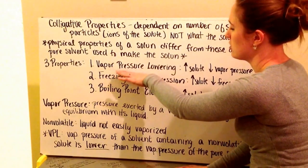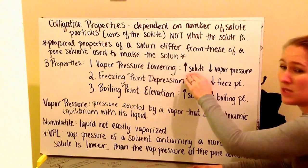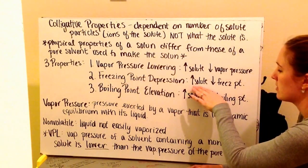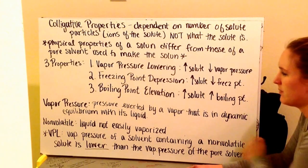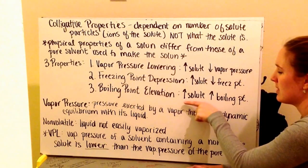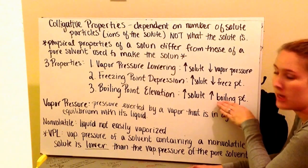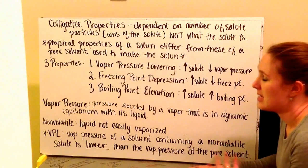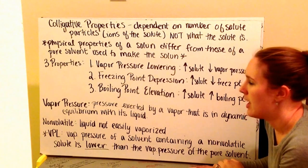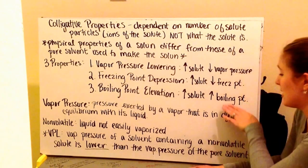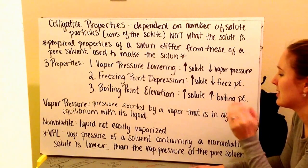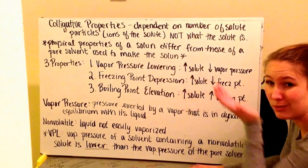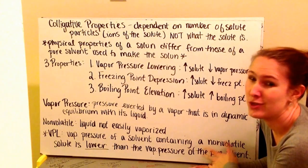There are three properties. The first is vapor pressure lowering — if we increase the amount of solute in our solvent, we decrease the vapor pressure of that solvent. For freezing point depression, increasing solute decreases the freezing point of the solution. For boiling point elevation, increasing solute increases the boiling point. Real-world examples include putting salt on roads for freezing point depression, and adding salt to water to raise its boiling point above 100 degrees Celsius.